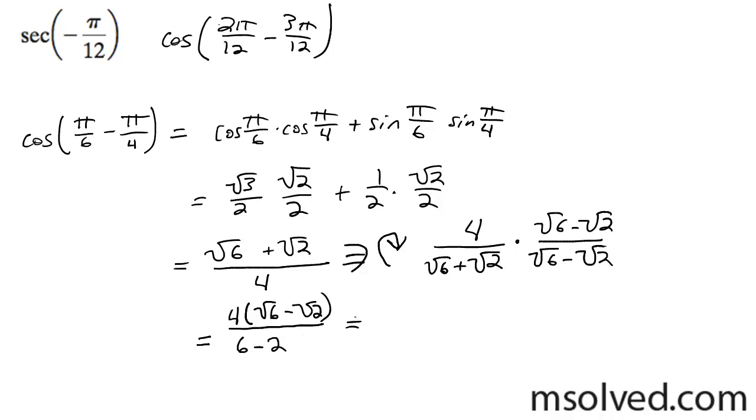And these 4s are going to cancel each other out, and you simply end up with √6 minus √2. Kind of nice, actually.